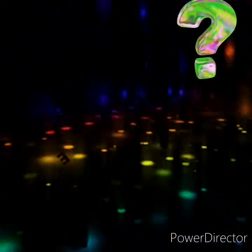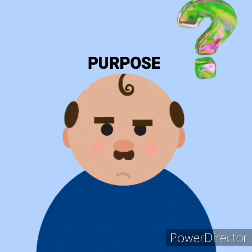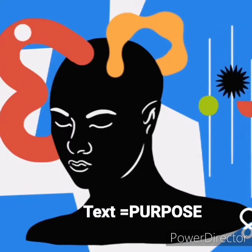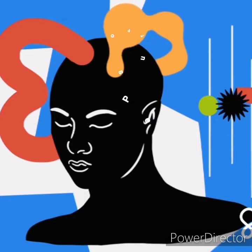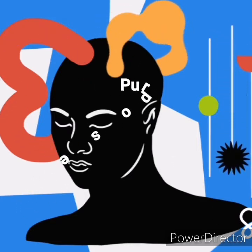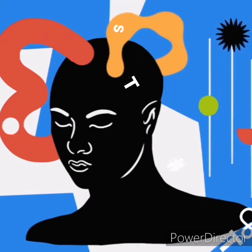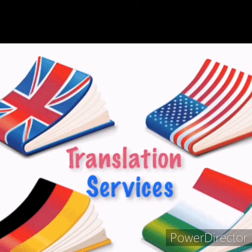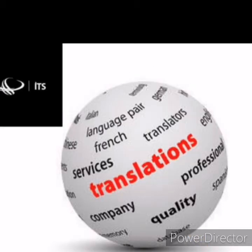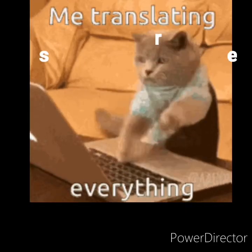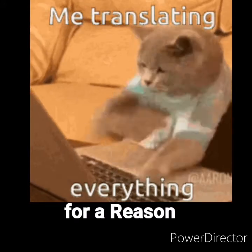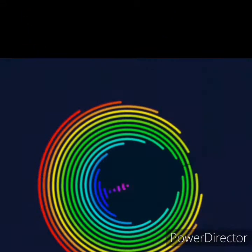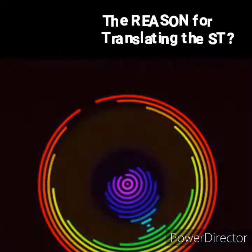Now, you might ask why purpose is given importance in this theory. According to this theory, a text is written for a specific purpose, and it is this purpose that the translator should work into to achieve, instead of just aiming for an equivalent translation of the source text. The main rule here is for the translator to translate the text based on the reason why the text is translated, meaning the main consideration is on what the target user wants the translation for.